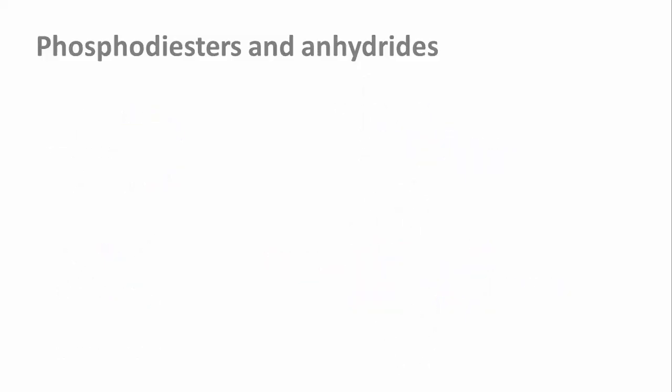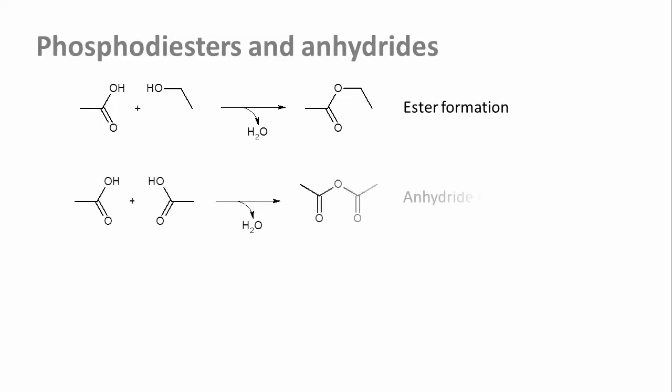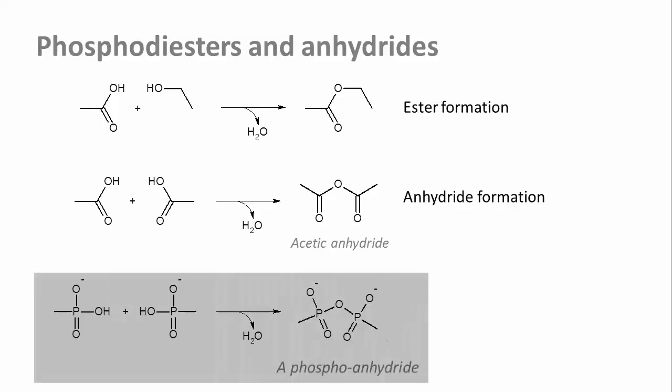Another thing phosphoric acid can do is to form anhydrides. If we imagine the formation of an ester as the condensation of an acid and an alcohol — where condensation is the technical term for linking two molecules with concurrent loss of water — we can likewise imagine linking two acid molecules. Anhydrides of two carboxylic acids, like acetic anhydride, are not generally stable in water and are hydrolyzed pretty quickly, so they have no role in biochemistry. But phosphoanhydrides are very important.